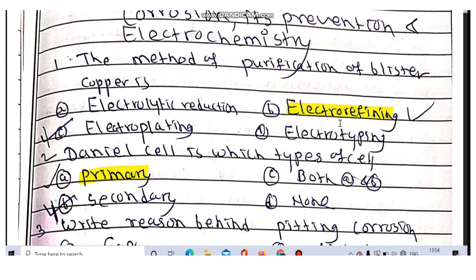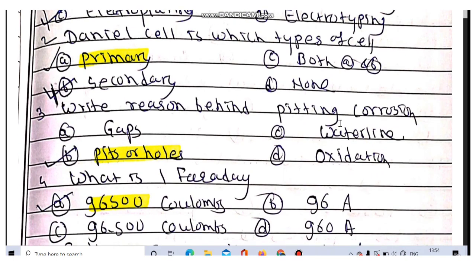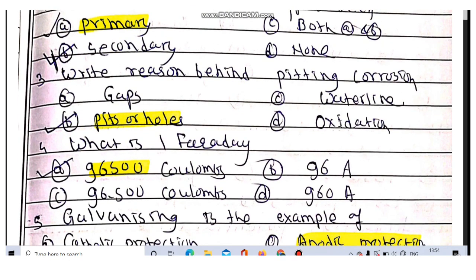The second question is Daniel cell is which type of cell? It is a primary type of cell. Question number 3 is write the reason behind pitting corrosion. Pits or hole formation occurs in pitting corrosion.